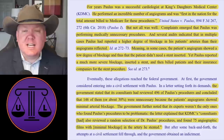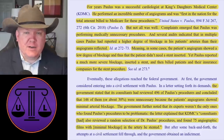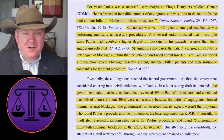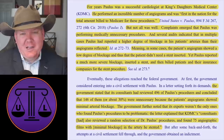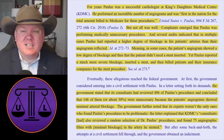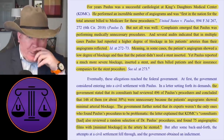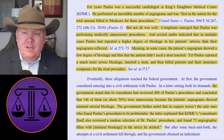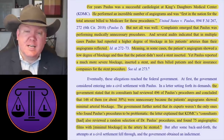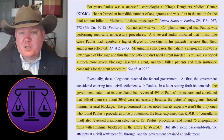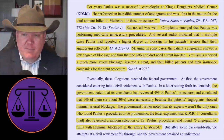Dr. Paulus was a successful cardiologist at King's Daughters Medical Center. He performed an incredible number of angiograms and was first in the nation for the total amount billed to Medicare for these procedures — the number one doctor in the entire country. Complaints emerged that Dr. Paulus was performing unnecessary procedures, and several audits indicated that in multiple cases, Paulus had reported a higher degree of blockage in his patients' arteries than the angiograms actually reflected. In some cases, the patient's angiograms showed a lower degree of blockage, and thus a patient didn't need a stent inserted, yet Paulus reported a much more severe blockage, inserted a stent, and then billed their patients and insurance companies for the stent procedure.